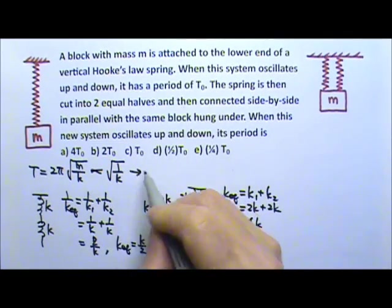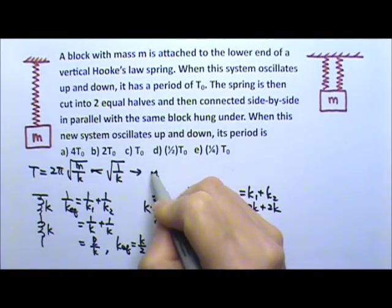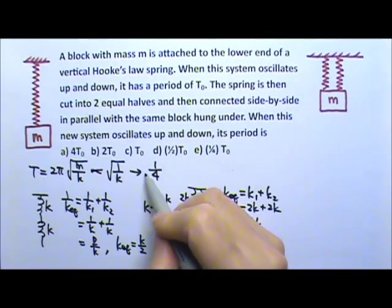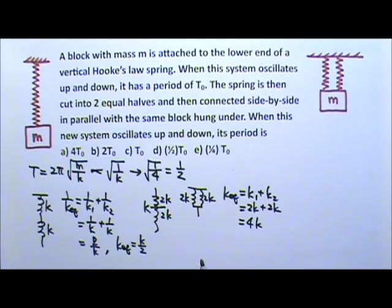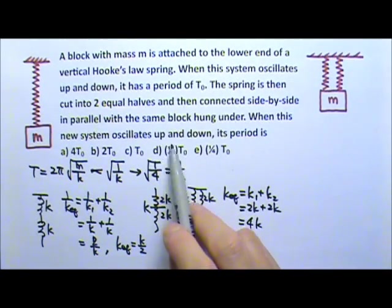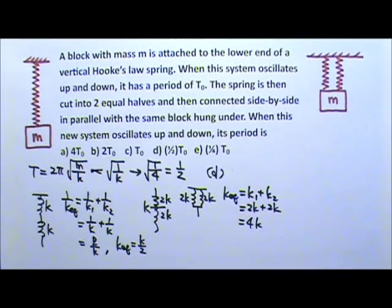That means K changes by a factor of 4. It is in the denominator and we have to take square root. So this is 1/2. That means the period changes by a factor of 1/2. So the answer is D. The new period is (1/2)T0.